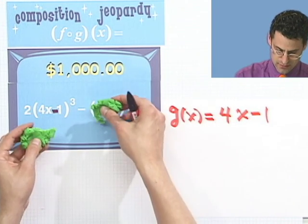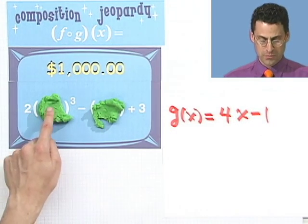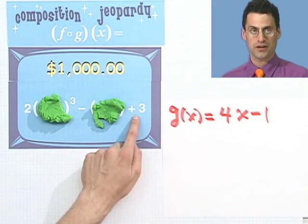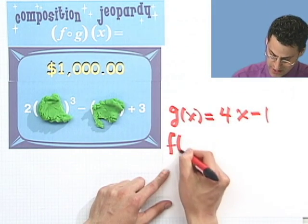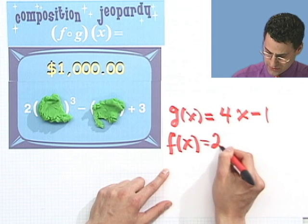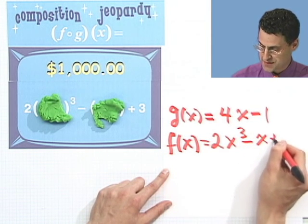And if I blob that out, what do I see? I see 2 blob cubed minus blob plus 3. So that's a good candidate for f. f of x equals 2x cubed minus x plus 3.